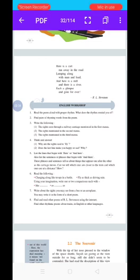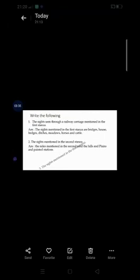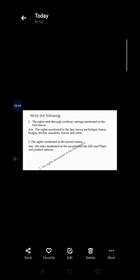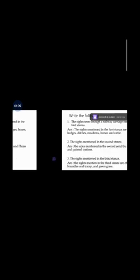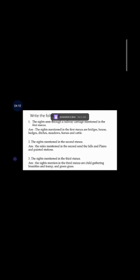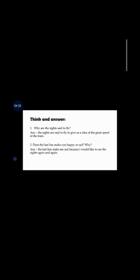Question number three: Write the sites seen through a railway carriage mentioned in each stanza. The sites mentioned in the first stanza are bridges, houses, hedges, ditches, meadows, horses, and cattle. The sites mentioned in the second stanza are the hills, plains, and painted stations. The sites mentioned in the third stanza are a child gathering brambles, a tramp, and green grass.